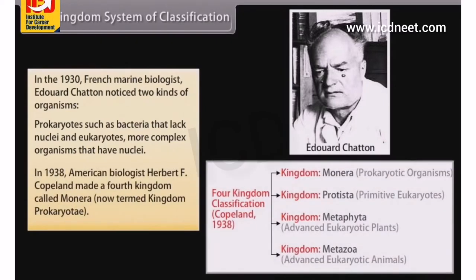In 1938, American biologist Herbert F. Copeland made a fourth kingdom called Monera, now termed Kingdom Prokaryote.